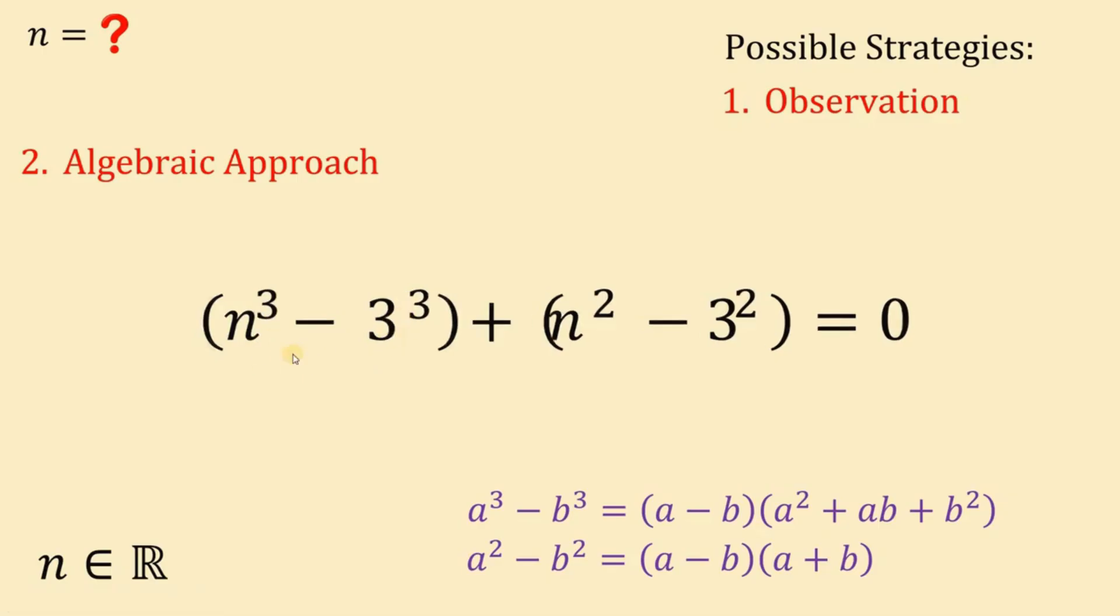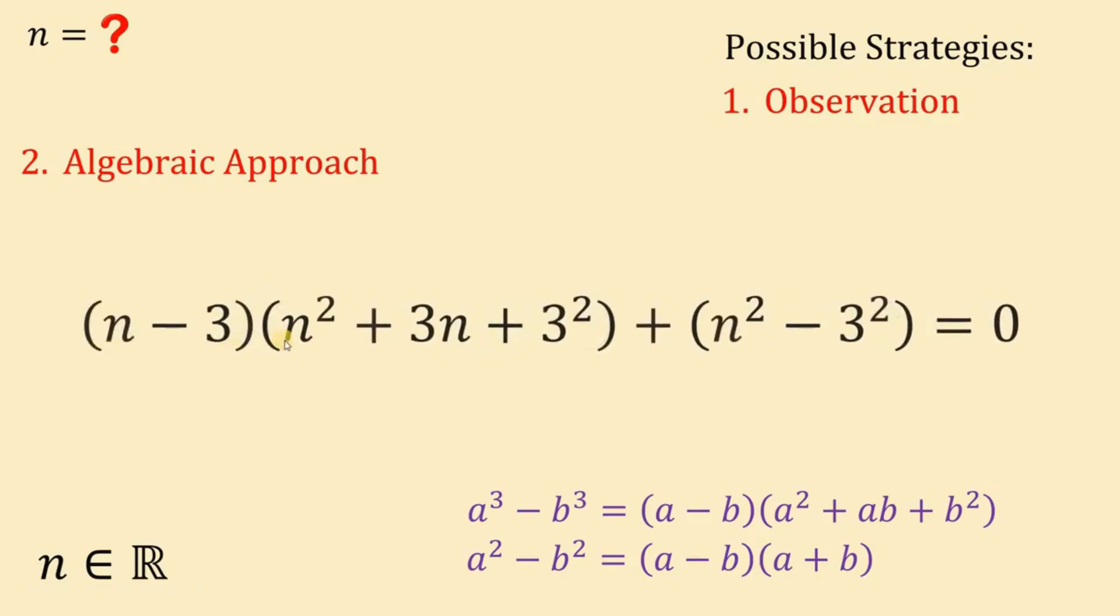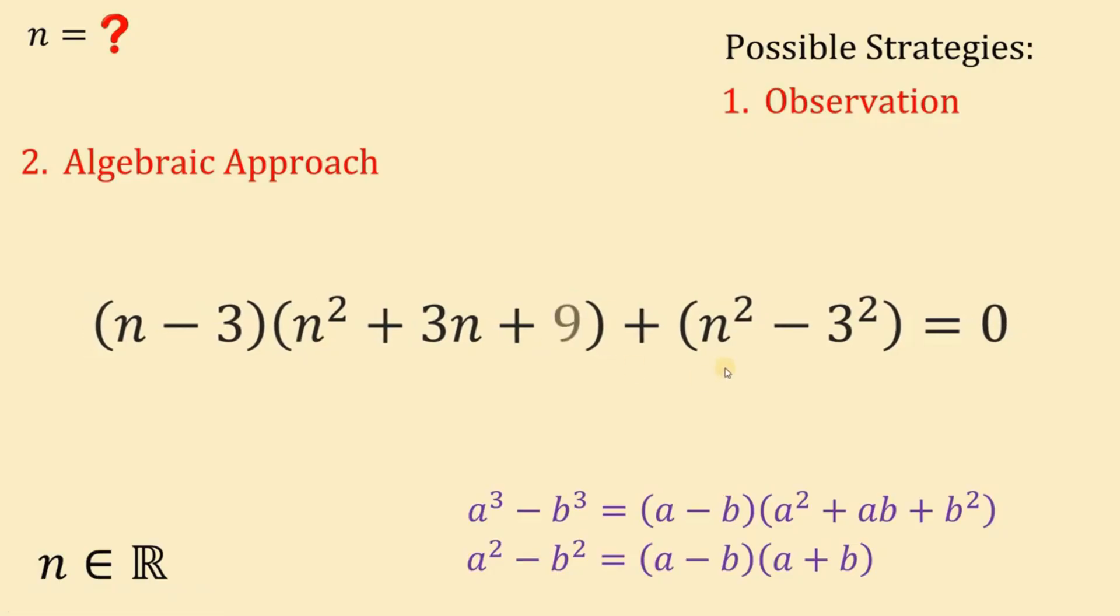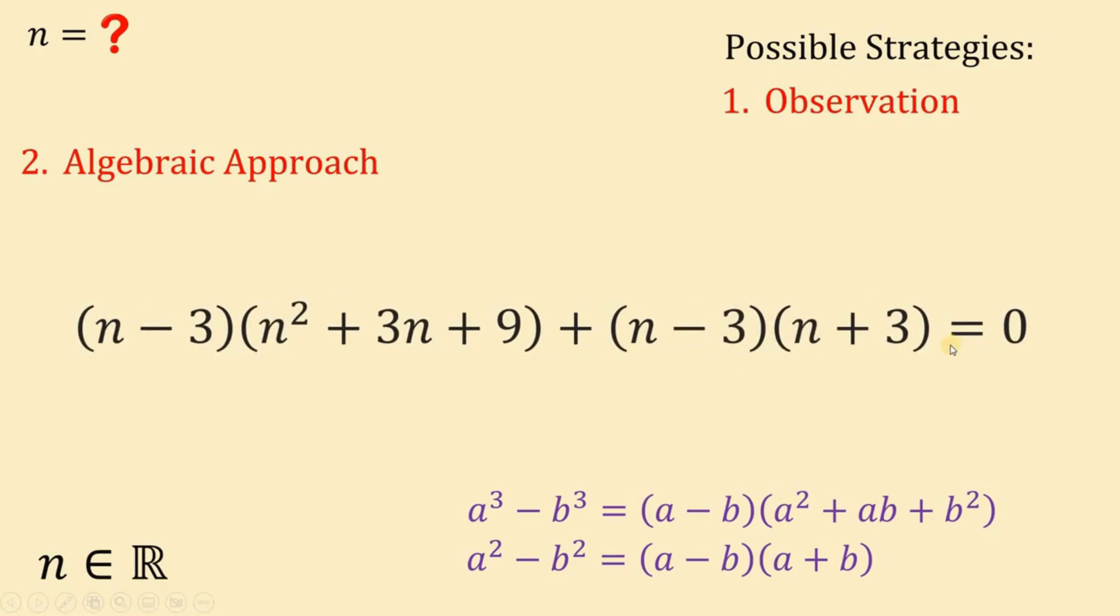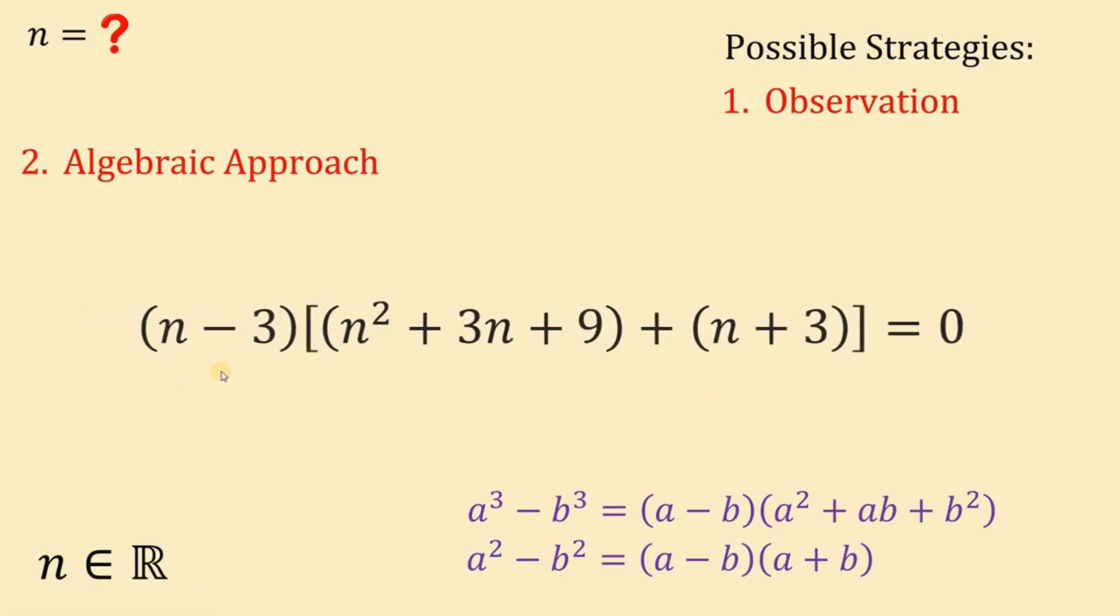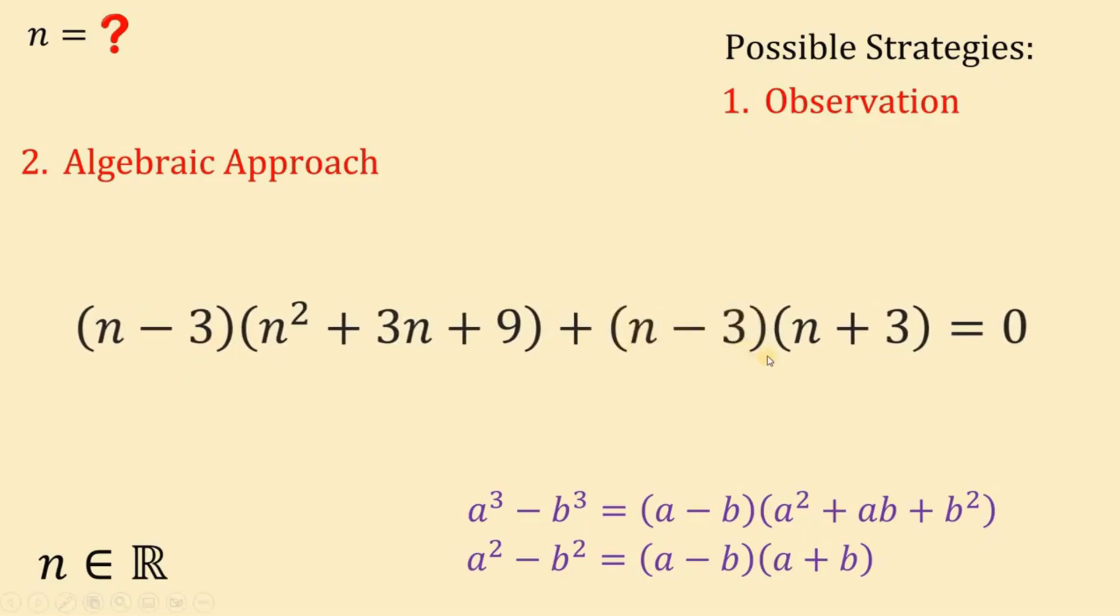n cubed minus 3 cubed can be factored as follows. We have n minus 3 multiplied by n squared plus 3n plus 3 squared, and 3 squared is just 9. Now, how about n squared minus 3 squared? Using difference of 2 squares, this can be factored as n minus 3 multiplied by n plus 3. Now, take note that we have a common factor of n minus 3. So we can factor out n minus 3.